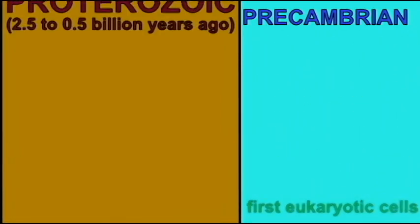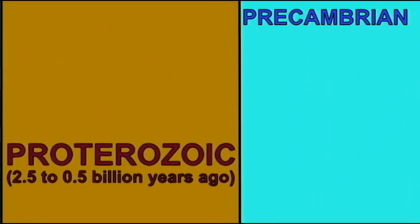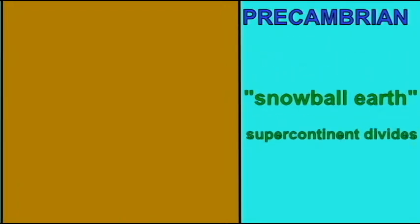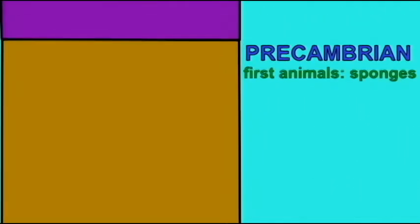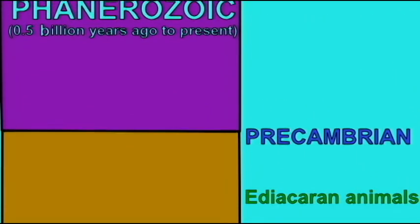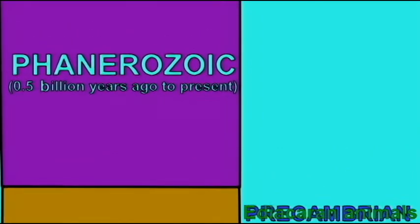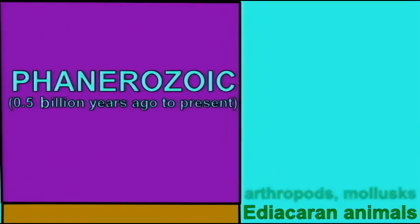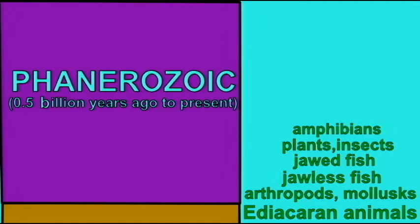In the Proterozoic eon, about 2 billion years ago, a new type of cell appears which is larger and more complex than the prokaryotic cell. From this point forward in the fossil record, there are not only prokaryotic cells but eukaryotic cells which can be found as fossils.